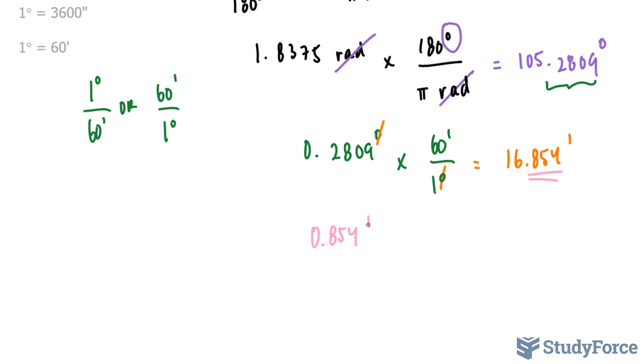The conversion factor for minutes to seconds is a combination of these two. We know that there are 60 seconds in 1 minute. Now, of course, this can be written in two ways. 1 minute is equal to 60 seconds, or 60 seconds is equal to 1 minute. So, if you chose this one, you're correct. By multiplying this number by 60 seconds over 1 minute, these two units will cancel out, and you're left with 0.854 times 60.